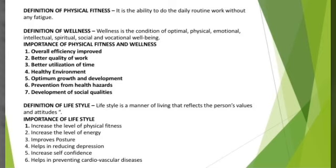Increase longevity: a healthy and positive lifestyle increases longevity. It slows down the aging process and helps older persons to stay strong and healthy. Improves posture: poor posture is a major cause of injury and often leads to huge problems in later life. A good and healthy lifestyle improves posture and also improves physical appearance. Helps in reducing depression: a positive lifestyle helps in reducing depression by accomplishing a healthy body, which elevates hormone levels in the body that regulate mood, helping in reducing depression.